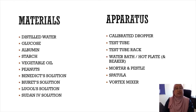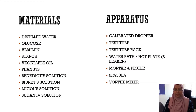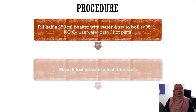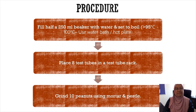These are the materials and apparatus that will be used in Experiment One. Materials are: distilled water, glucose, albumin, starch, vegetable oil, peanuts, Benedict solution, biuret solution, Lugol's solution, and Sudan IV solution. For the apparatus: calibrated dropper, test tube, test tube rack, water bath or hot plate, mortar and pestle, spatula, and vortex mixer.